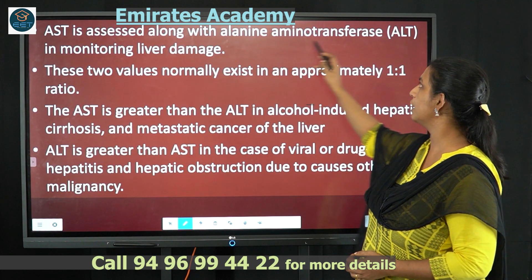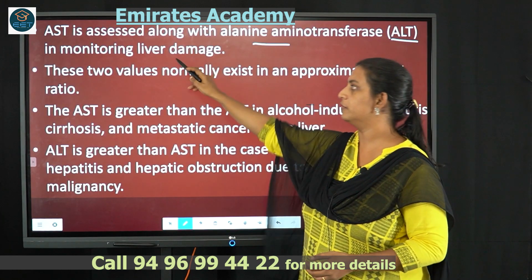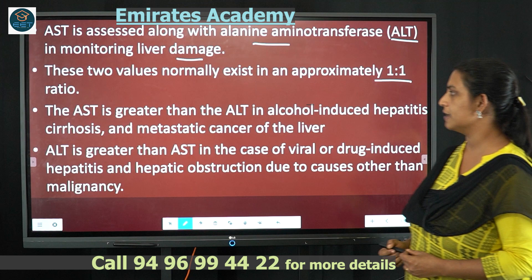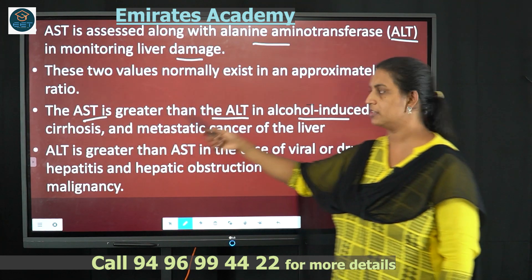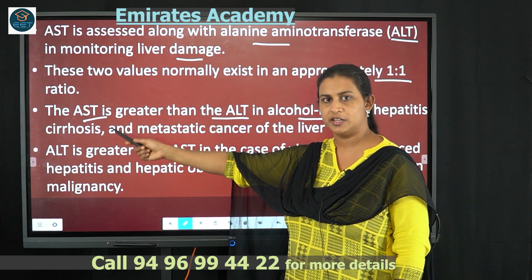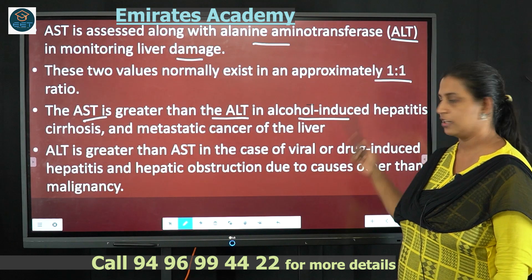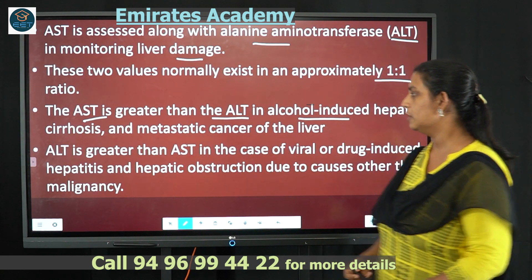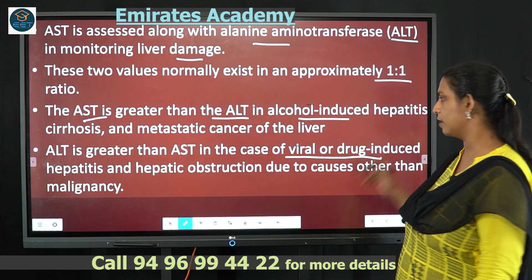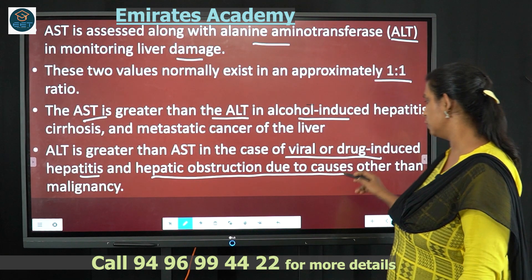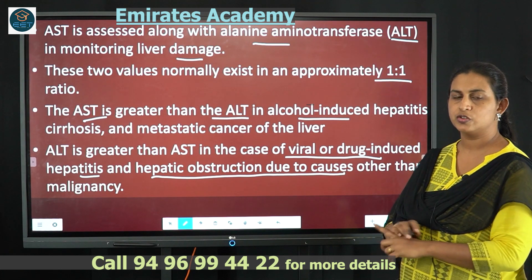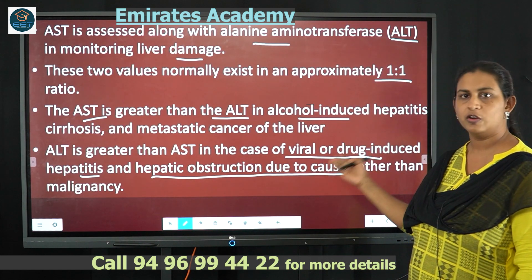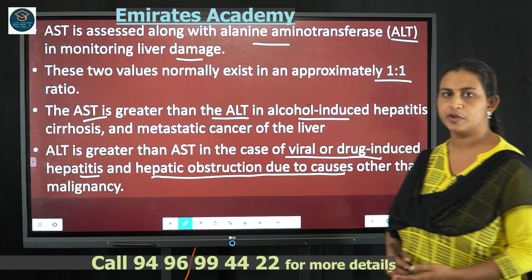Aspartate aminotransferase is checked along with alanine aminotransferase (ALT) in monitoring liver damage. The normal ratio of these two enzymes is 1:1. AST greater than ALT indicates alcohol-induced hepatic cirrhosis or metastatic cancer of the liver. Conversely, ALT greater than AST is seen in viral or drug-induced hepatitis and hepatic obstruction due to other malignancies.